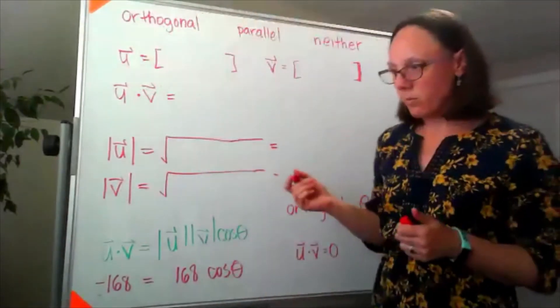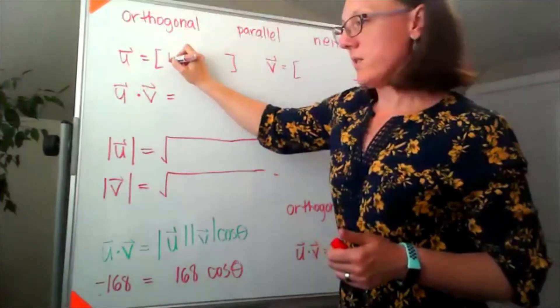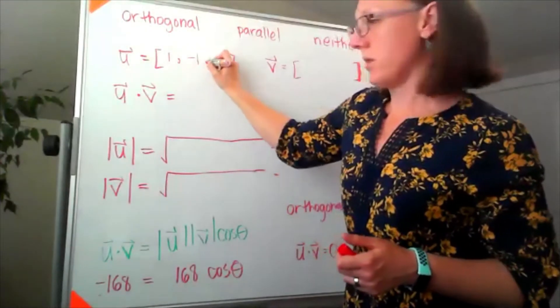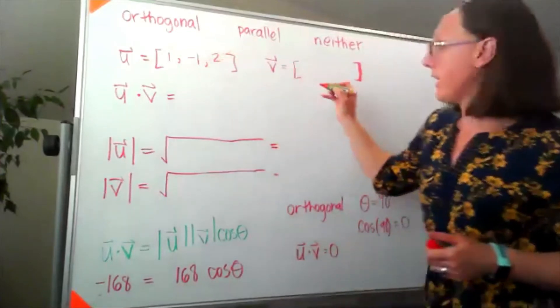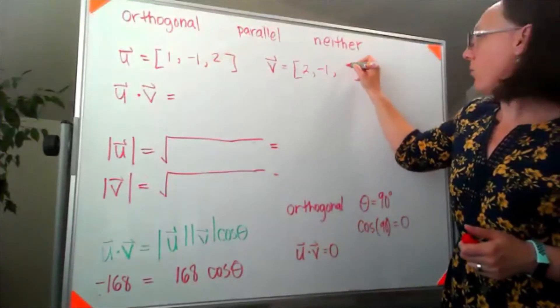The next one we're given our u is 1, negative 1, 2, and our v is 2, negative 1, 1.